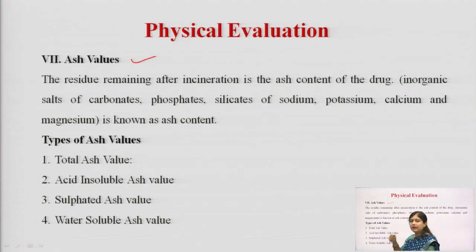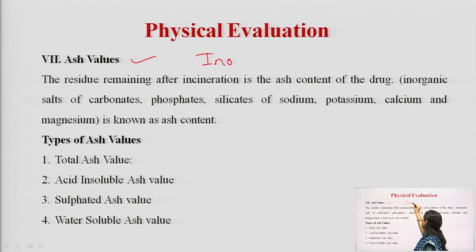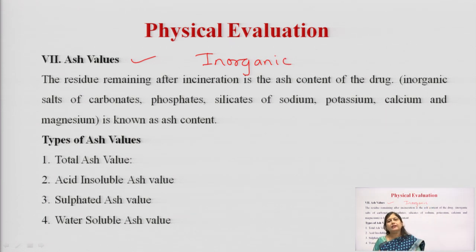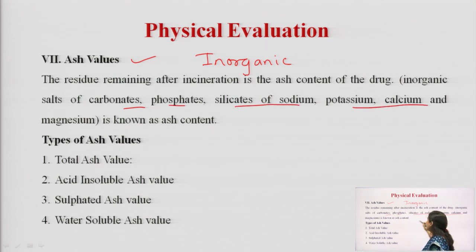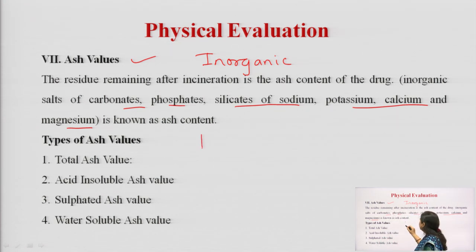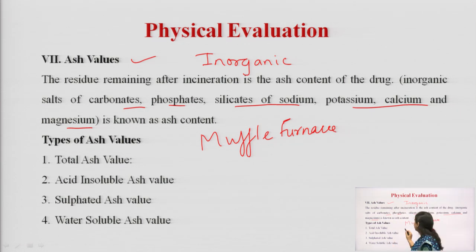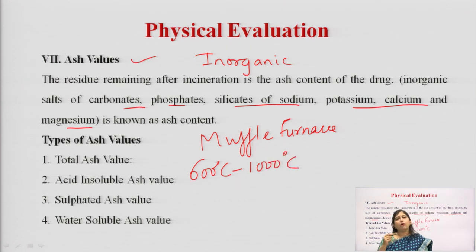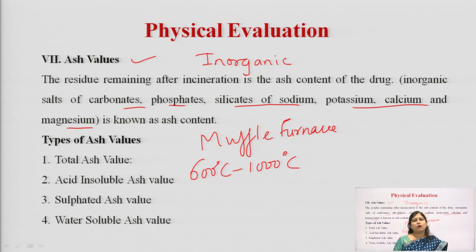Ash value is studied to identify the inorganic content of a drug. Though the drug is from a natural source, it takes up many minerals and metals — inorganic substances such as carbonates, phosphates, and silicates of sodium, potassium, calcium, and magnesium. We determine it by incineration: samples of known weight are put into a muffle furnace and heated at a very high temperature of 600°C to 1000°C. This completely burns out all carbon and hydrogen, and whatever remains is the inorganic material like silicates or salts.